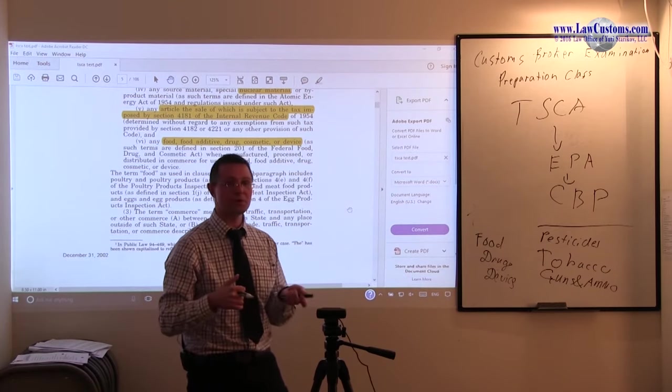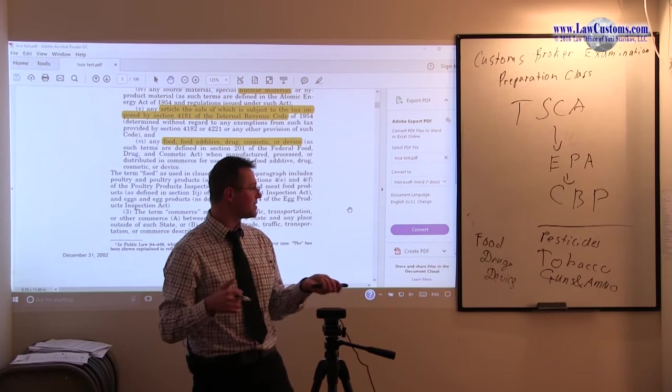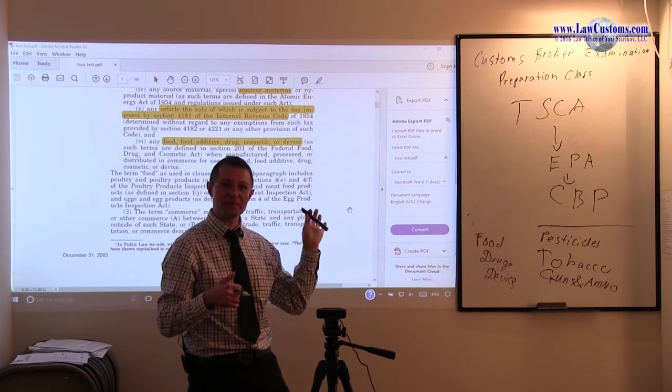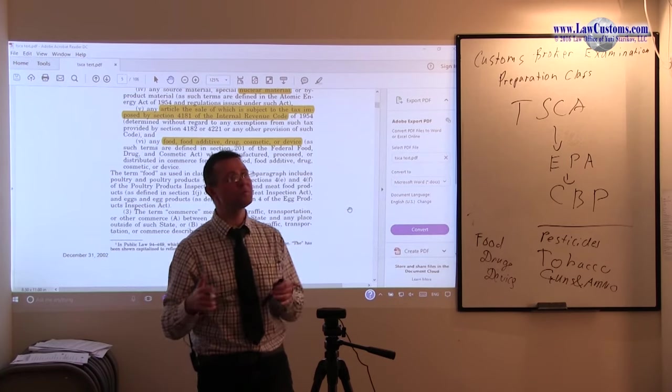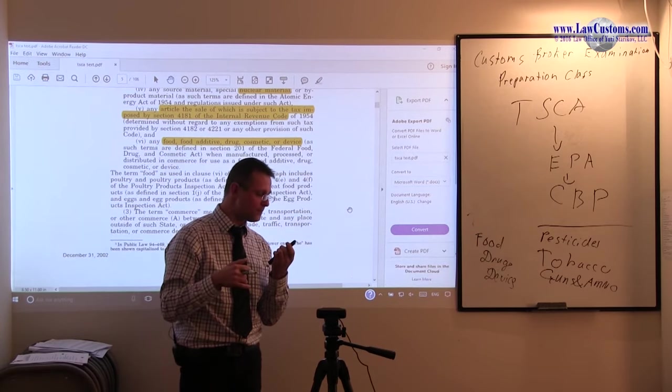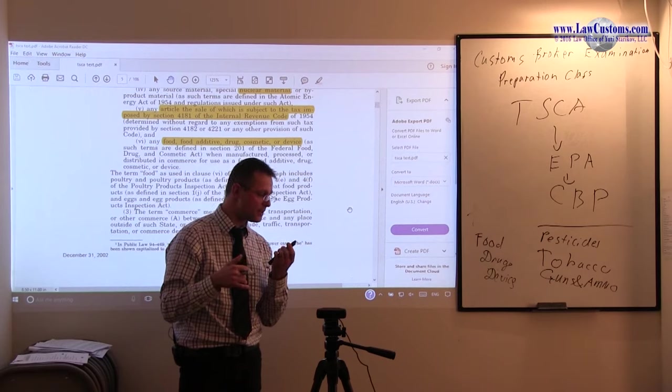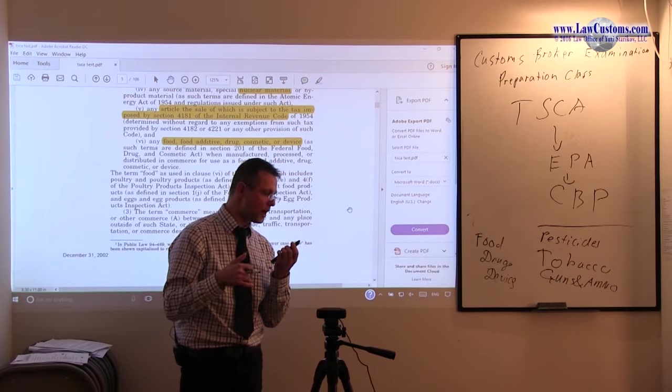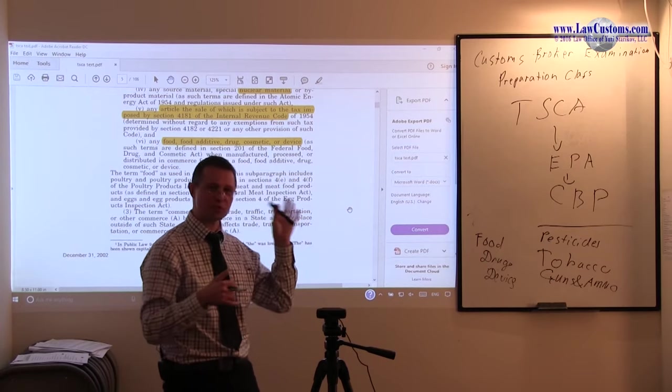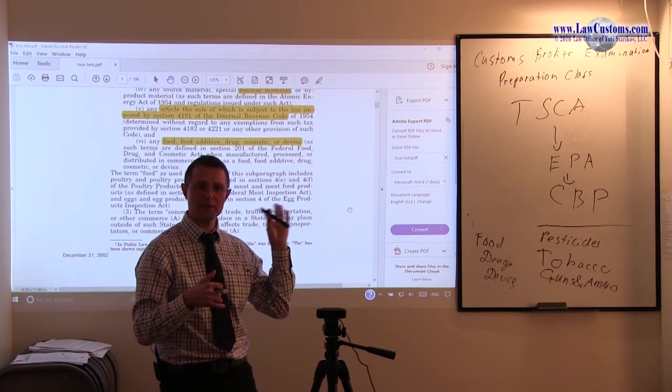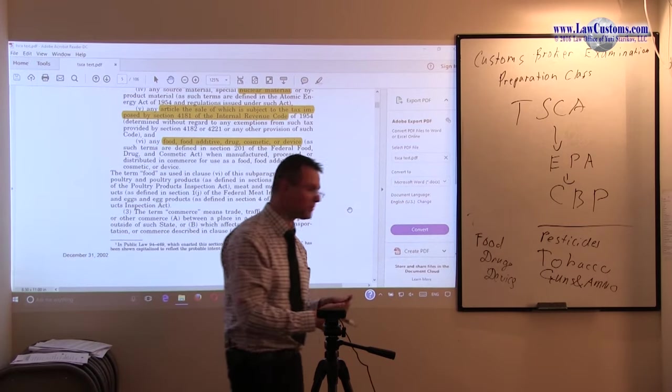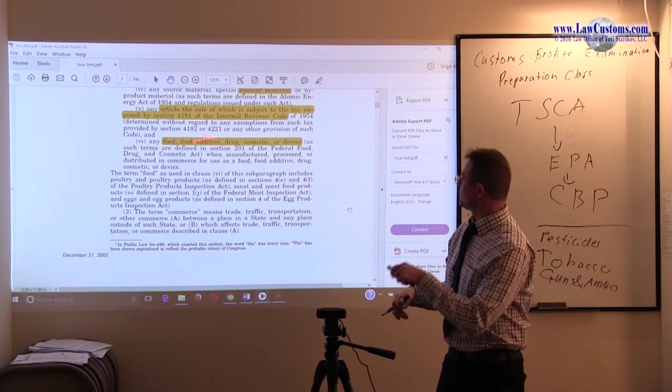For example, this laser pointer, even though it's not medical or a drug, is considered a device that must go through Food and Drug Administration declaration procedures. I believe it's Form FDA 2877. Since this one was made in China, it has declarations about radiation emission standards. Some products you'd never think of do come under jurisdiction of an agency, and if you don't comply, you may be in trouble.